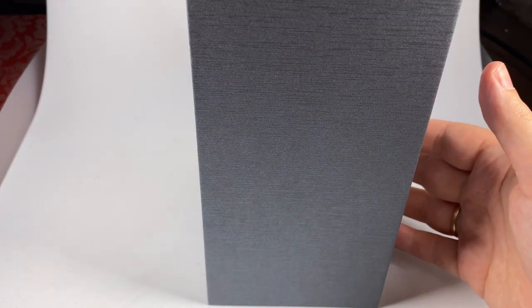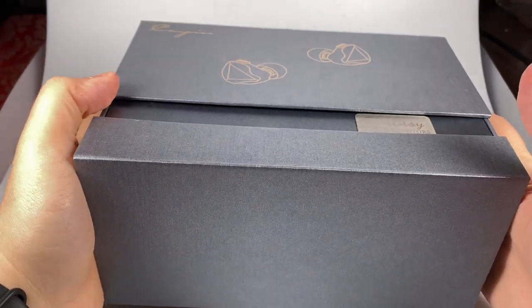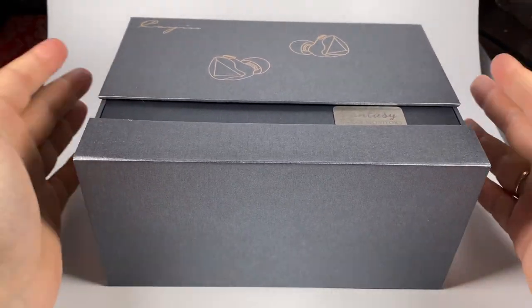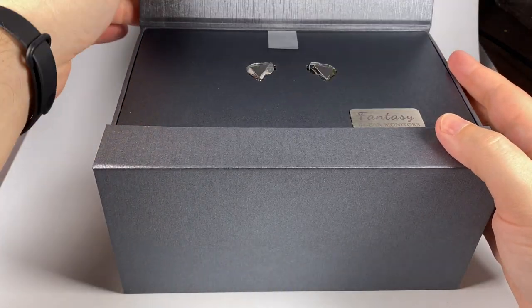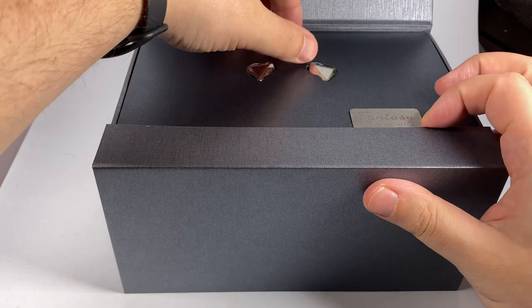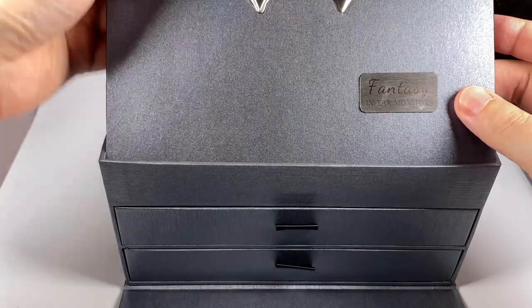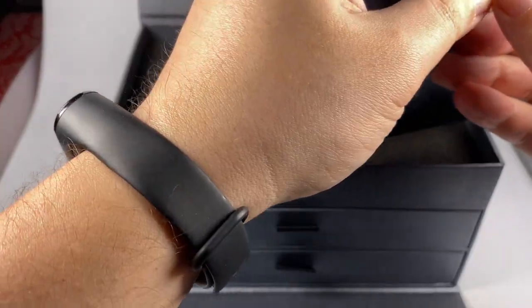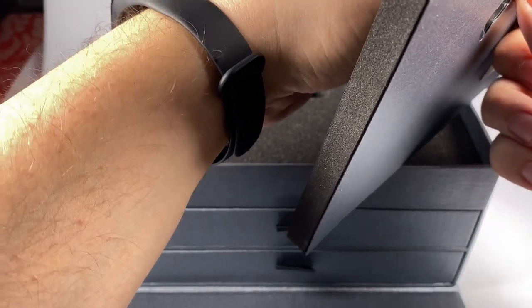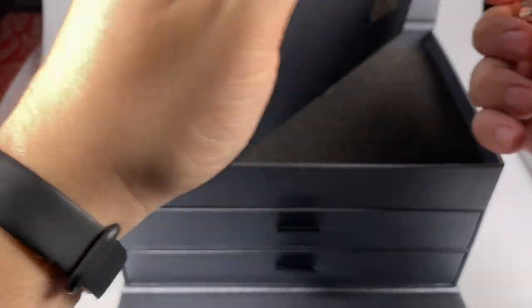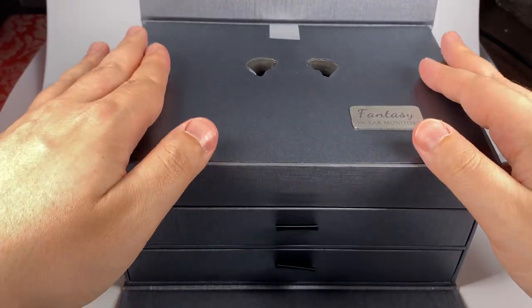Let's remove the outer part. Here is the internal box, and the unusual approach continues because it opens in a few different ways. The first opening is here and the second one is here. On top you can get the earphones themselves. You can get this top part and grab the in-ear monitors easily.